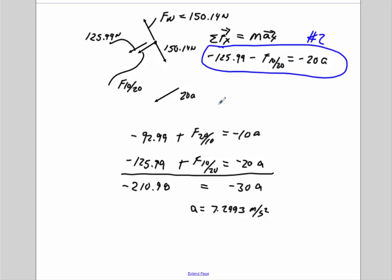Now to find F 20 onto 10, or F 10 onto 20, all I have to do is take this value, which I calculated right here. I will plug it back into my acceleration and solve for that. And when I do that, I get F 20 onto 10, which is equal to F 10 onto 20, as equal to 20 newtons.